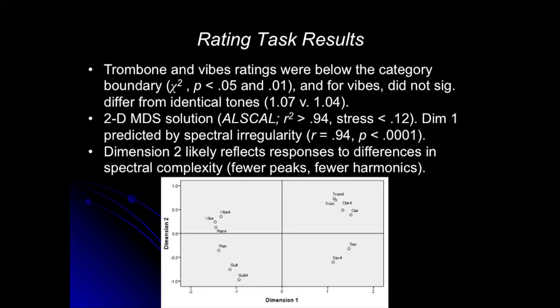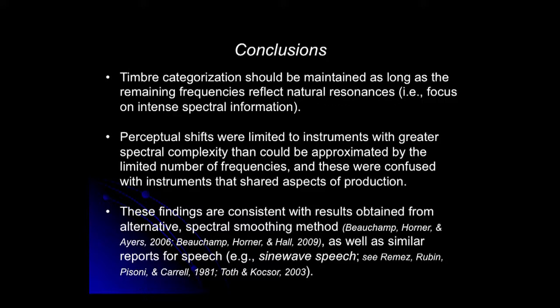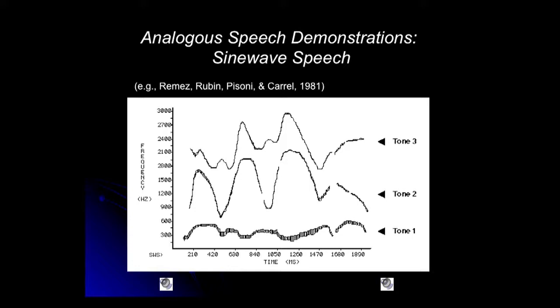The dimensions also relate to spectral information. The first dimension seems to relate to spectral irregularity — really where the peaks in the spectrum are, a form of formant structure. The other relates to spectral complexity — how many peaks. So timbre categorization should be maintained as long as we have energy in the right place where the resonances are for the original instrument. Any shifts in performance were actually restricted to the instruments that had the biggest problems being categorized in the first place — if they had problems with all harmonics present, they'll definitely have problems when we remove some too.